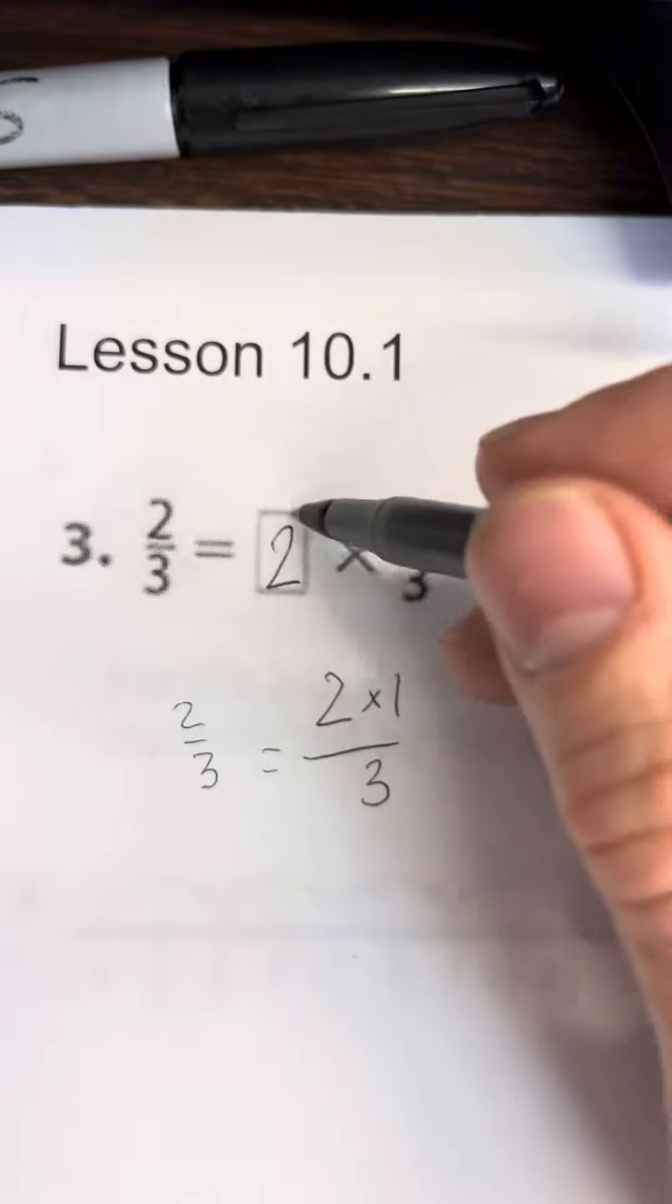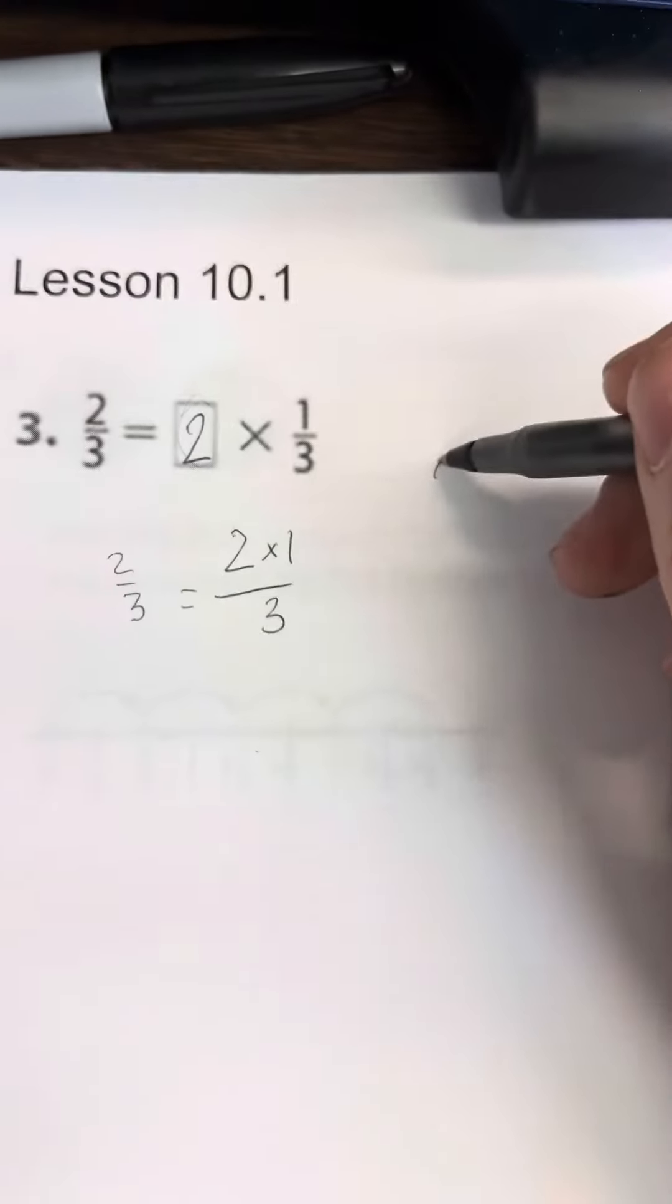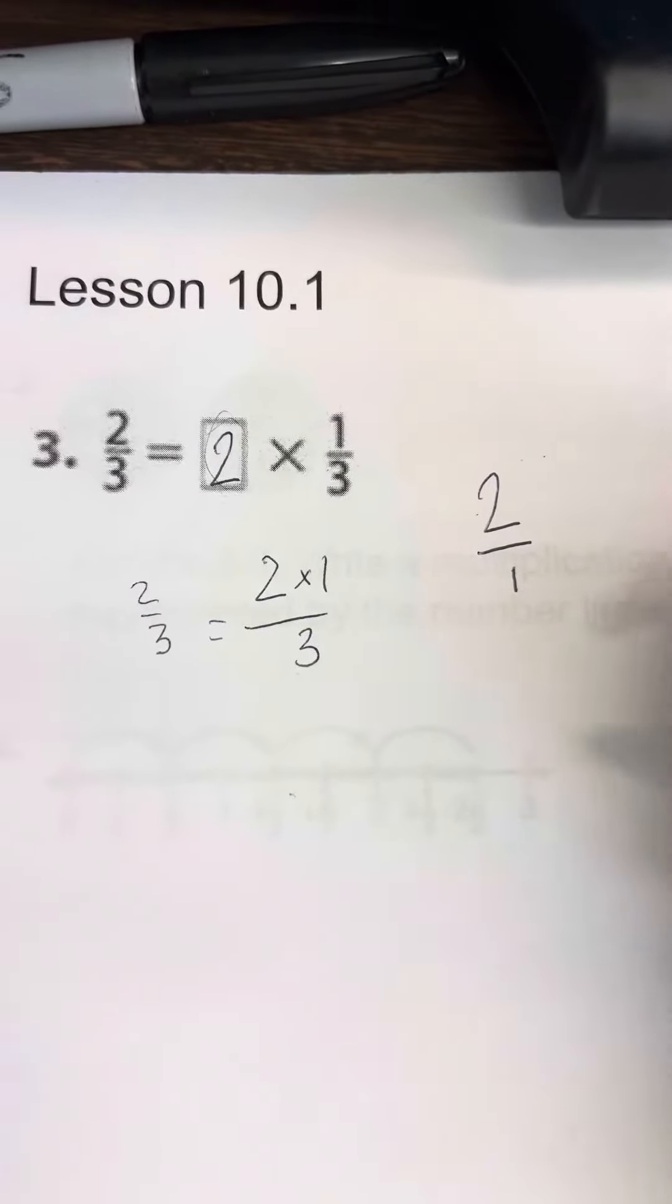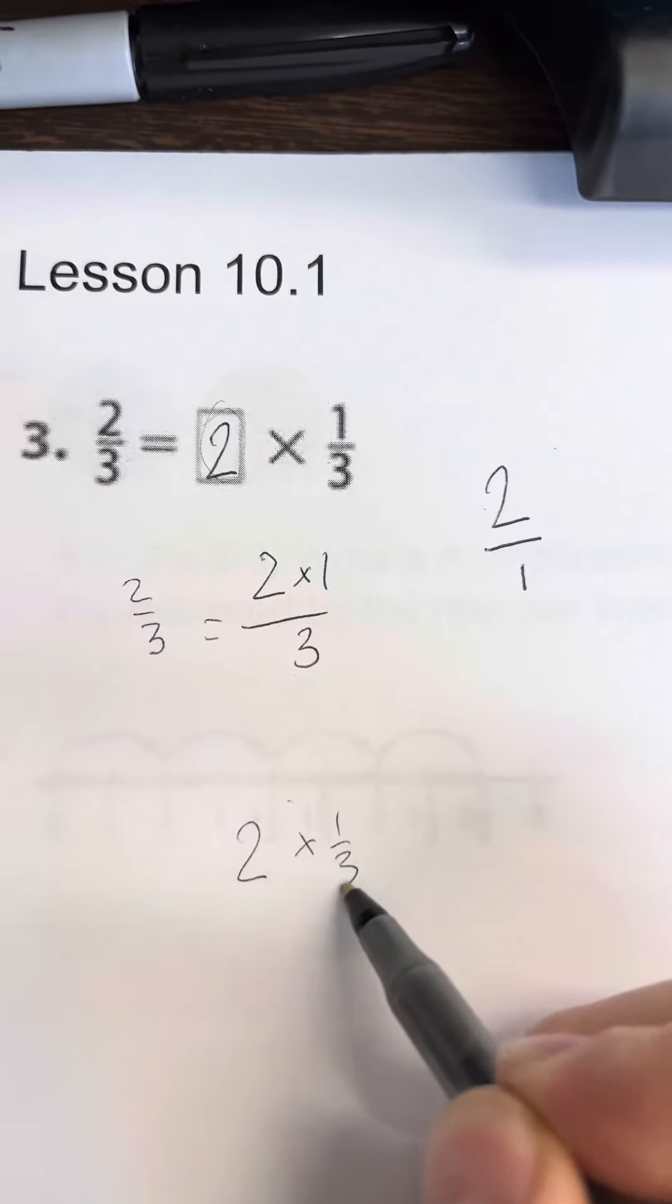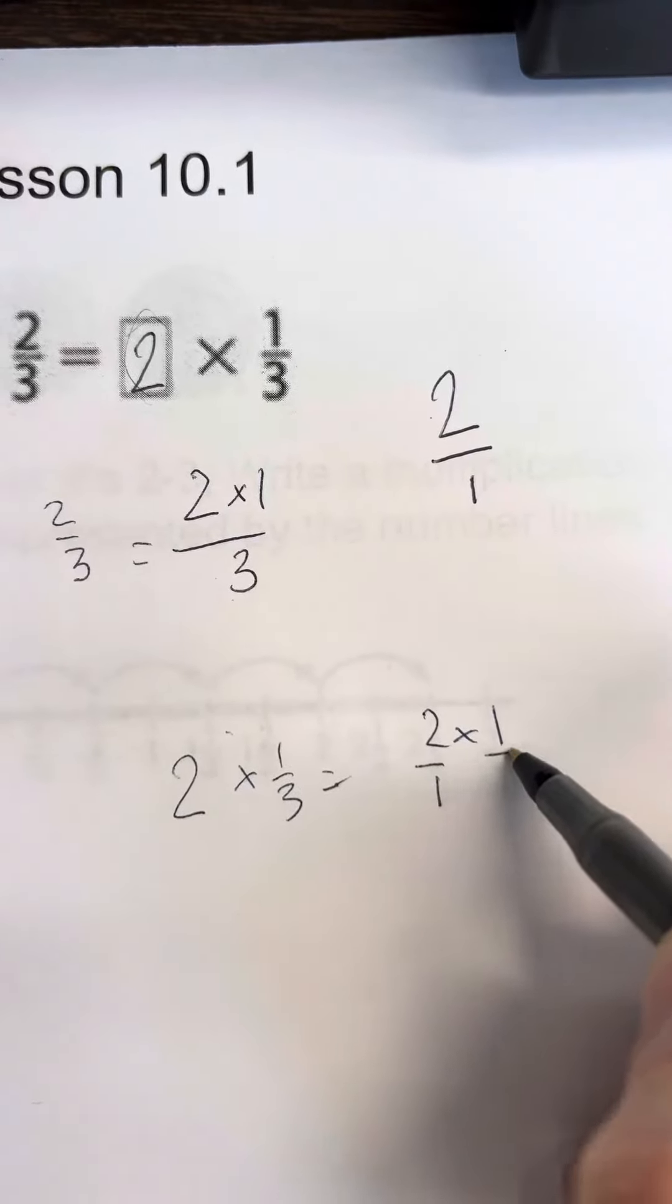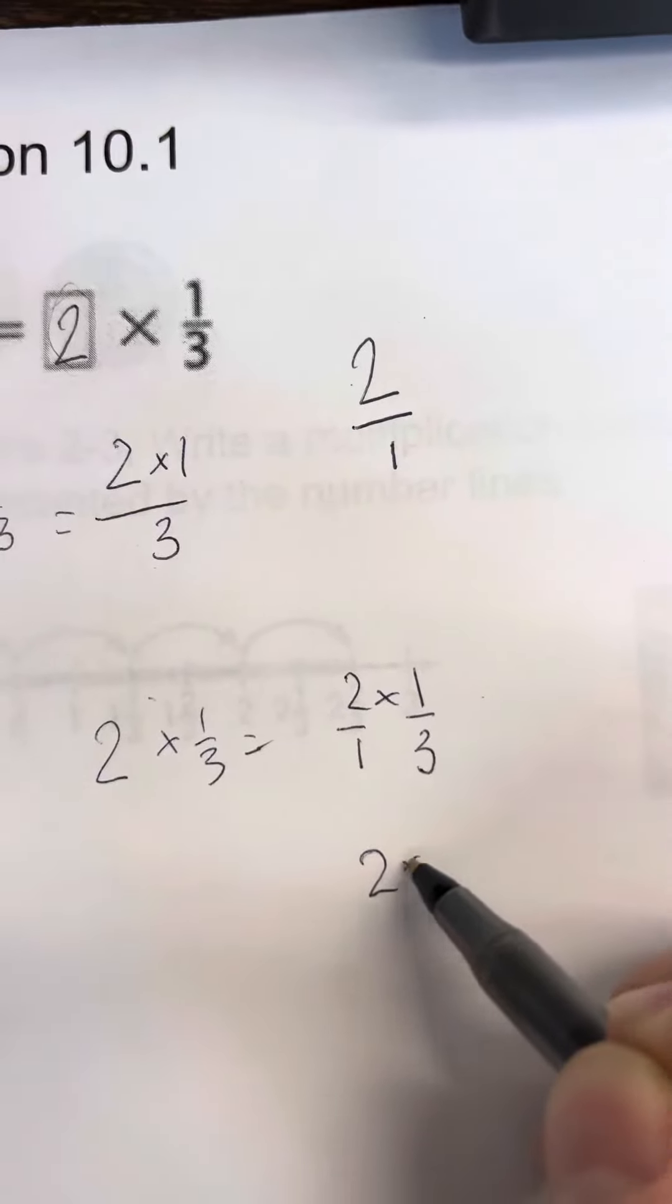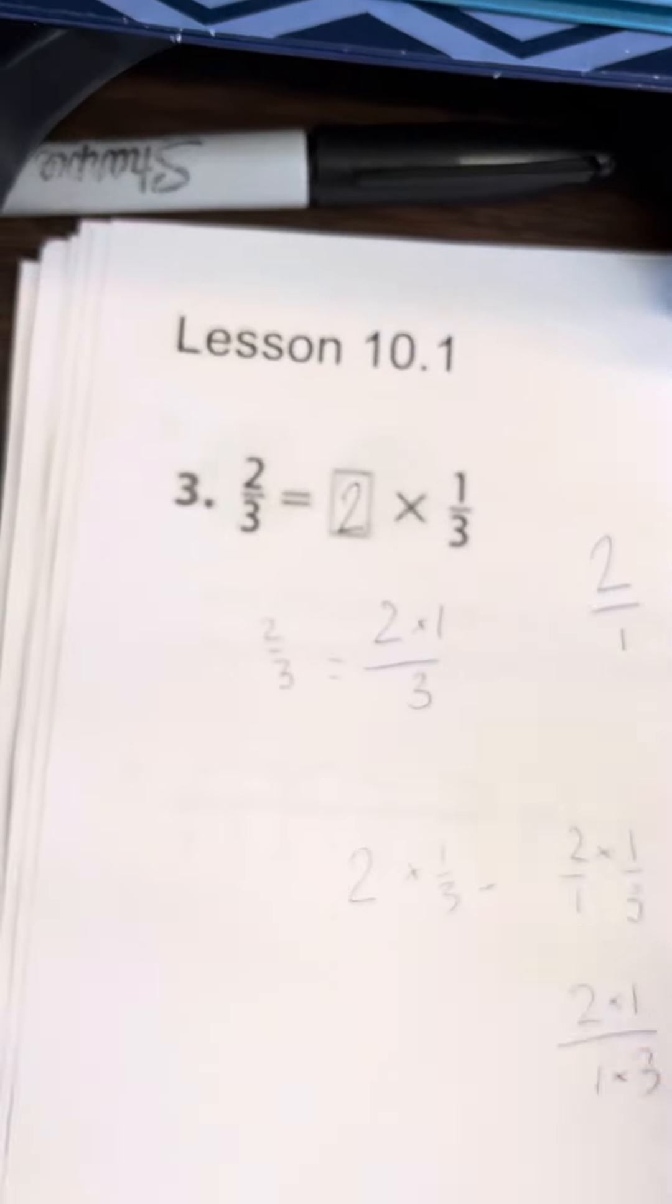It's also good to know that when you're writing a whole number like 2, that's actually 2 over 1. So we could also write this as 2 times 1 third equals 2 times 1, or 2 over 1 times 1 third, or 2 times 1 over 1 times 3 equals 2 thirds, which is the same as before.